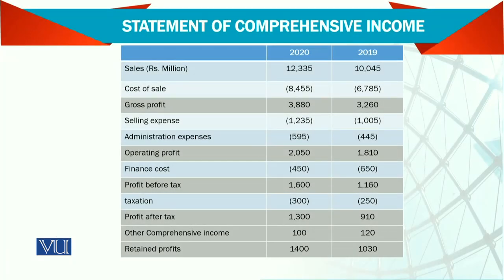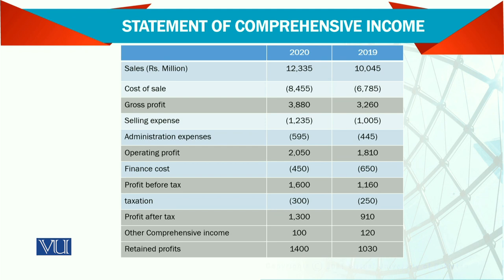Now, see the format of the statement of comprehensive income. Sales — in rupees in millions, showing two years, 20 and 19. Then cost of sales, giving you gross profit. Then selling expense and administrative expense; reducing these, we get operating profit. Then we have finance cost — this is also very important. Sometimes we call it interest cost, but interest is only one item of finance cost; there are also bank charges and others, all clubbed together into finance cost.